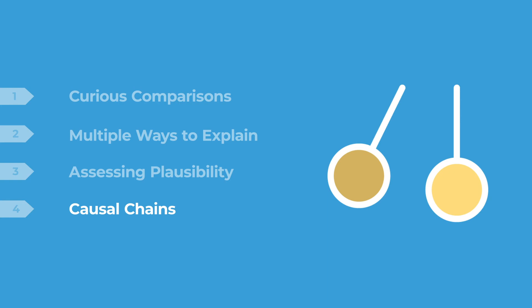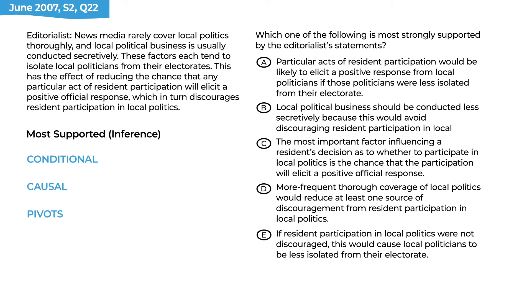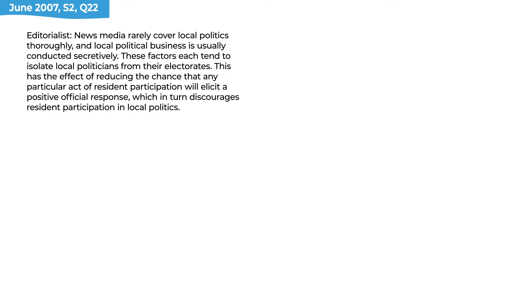Our last topic shifts emphasis toward the inference family, where we're given facts and asked to see what we can derive from them. Pause the recording and try this problem. This is a most supported question — we're not reading an argument with a premise and a conclusion. Our job is to read these facts and see if we can connect any of them, looking for conditional logic rules to chain together, causal connections, or a pivot reconciling what came before with what came after. When we read this paragraph, causal language should jump out at us: 'these things tend to isolate' — that's causal; 'this has the effect of' — causal; 'this in turn discourages' — we've got a causal chain.